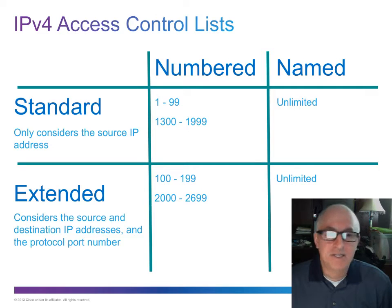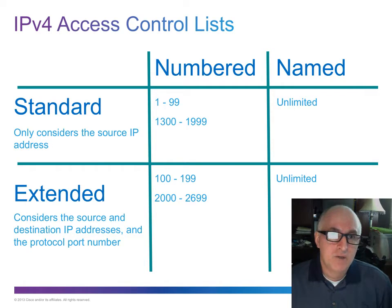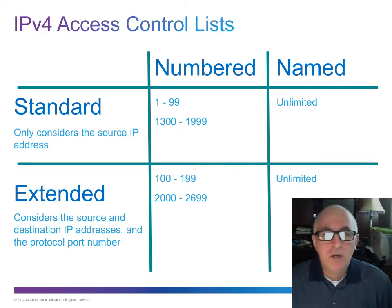Enter extended ACLs, which allow you to look at the source address, the destination address, the port number, or any combination of those. So you could, for instance, filter all traffic as long as it was on port 80 — something like that could be done with an extended ACL. Whenever possible, you always want to use extended ACLs.